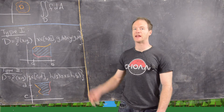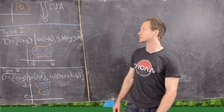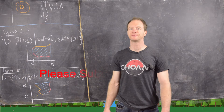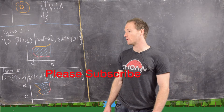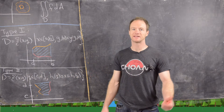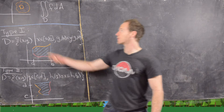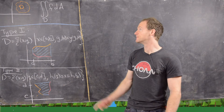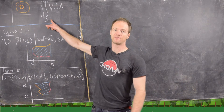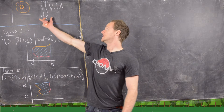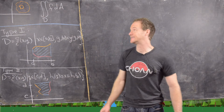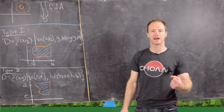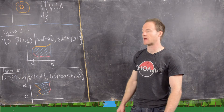Here we want to look at double integrals over more general regions. In a previous video we looked at double integrals over rectangles in the plane, but here we want more general regions like a blob. We have this double integral over d of our function f dA, where dA is a differential area component.